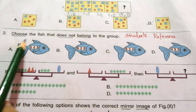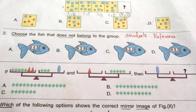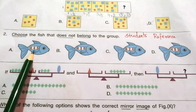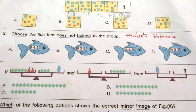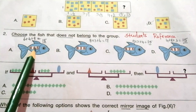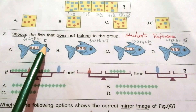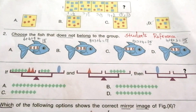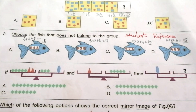Question 2: To choose the fish that does not belong to the group, we look at the four options and relate the numbers. If we add the three digits in each option, we get 15, 17, 15, and 15. The odd one out is B, which gives 17.